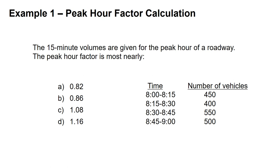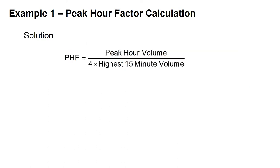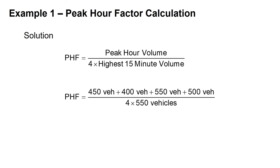Example: We're given 15-minute volumes for the peak hour of a roadway. For the four time periods between 8 and 9 AM, the number of vehicles are 450, 400, 550, and 500. We need to find the peak hour factor. PHF equals total hourly volume divided by four times the highest 15-minute volume: (450 + 400 + 550 + 500) divided by (4 × 550) gives a peak hour factor of 0.86, which is answer B.